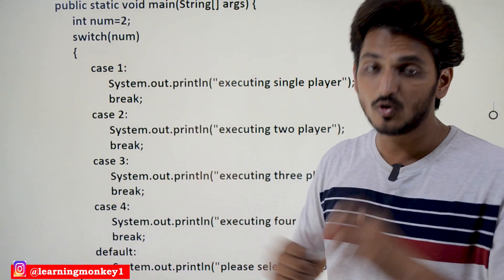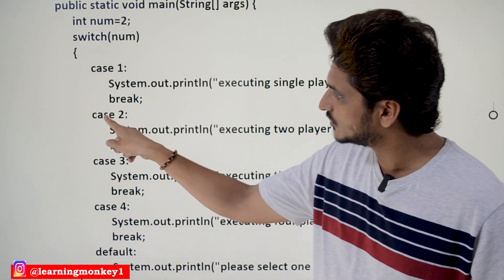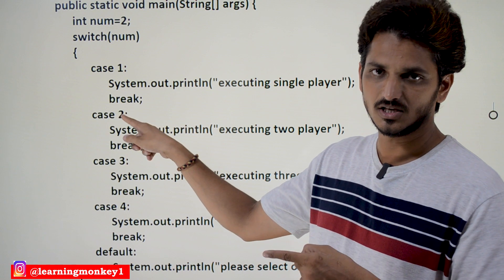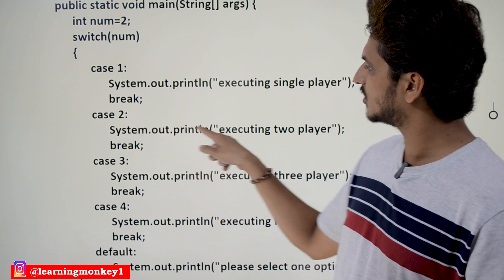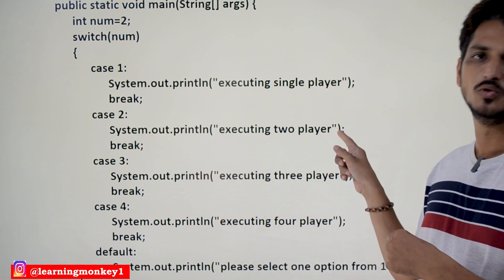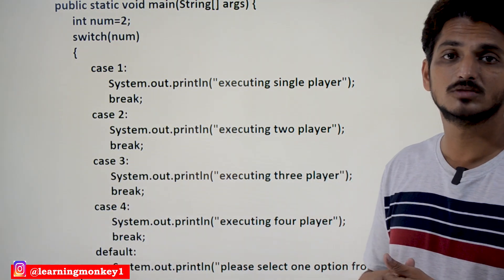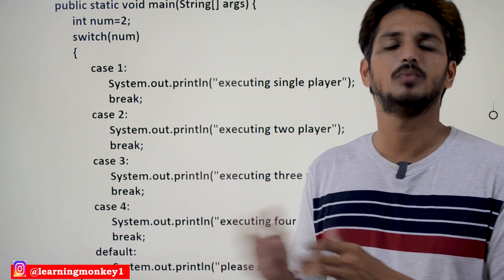So if num is equal to 2, which block of code is going to execute? It is going to execute case 2, because it is matching. So System.out.println of 'executing 2 player' — the output is going to display 'executing 2 player'.